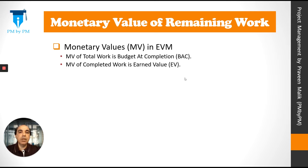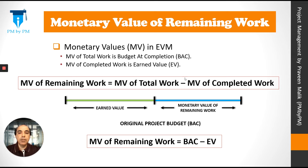Now that we have understood the remaining work, let's understand the monetary value of remaining work. In EVM terminology, there are two important monetary values: the monetary value of the total work is Budget at Completion, or BAC; and the monetary value of the completed work is Earned Value, or EV. So the monetary value of the remaining work equals BAC minus EV.